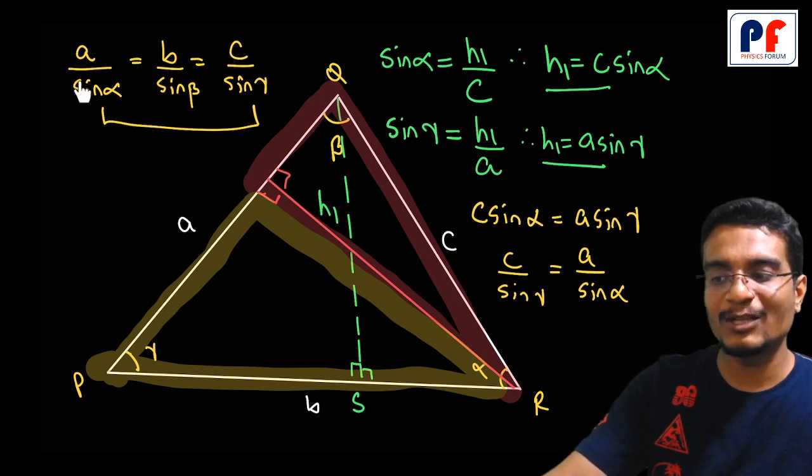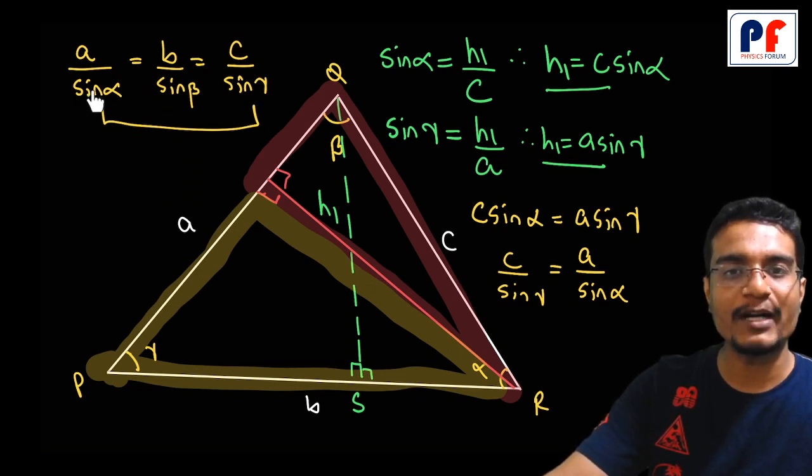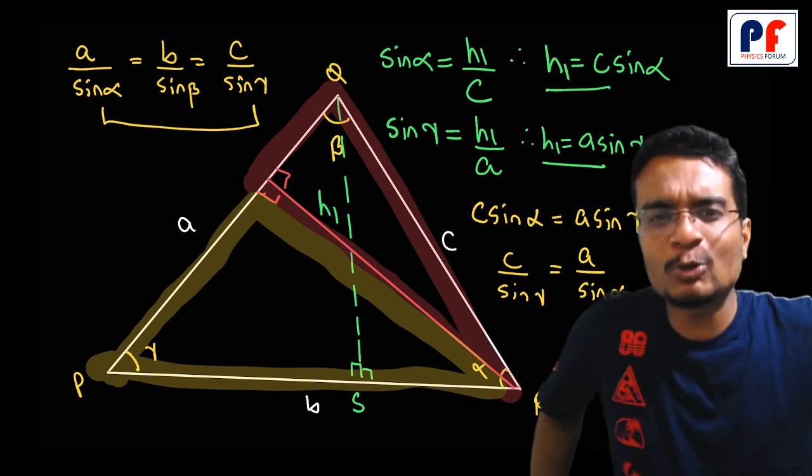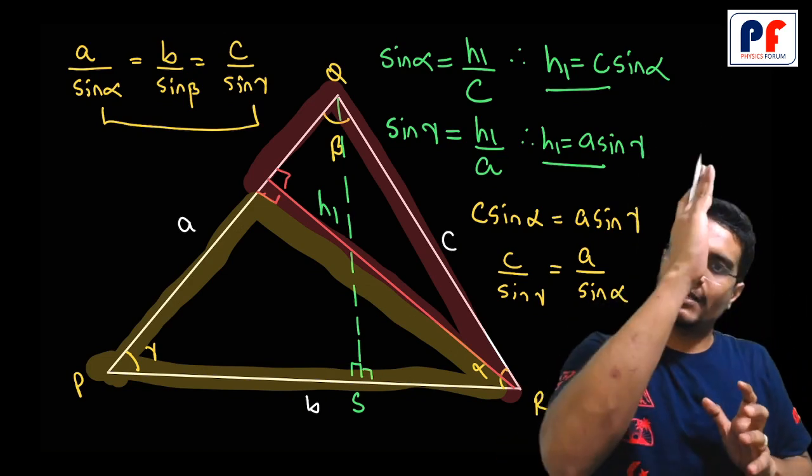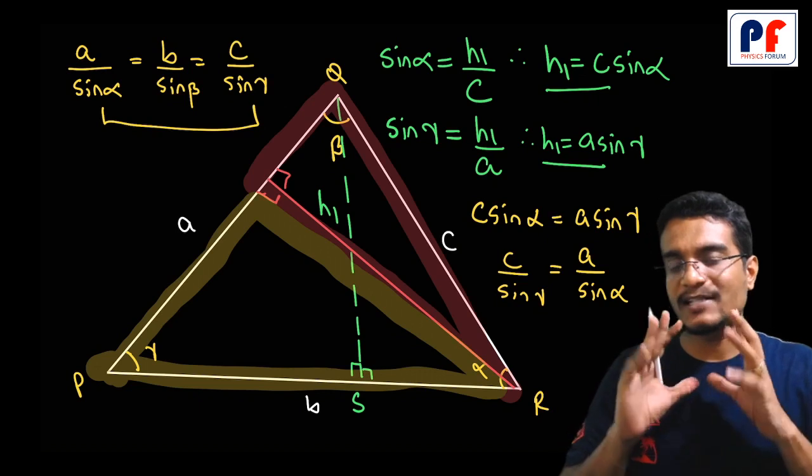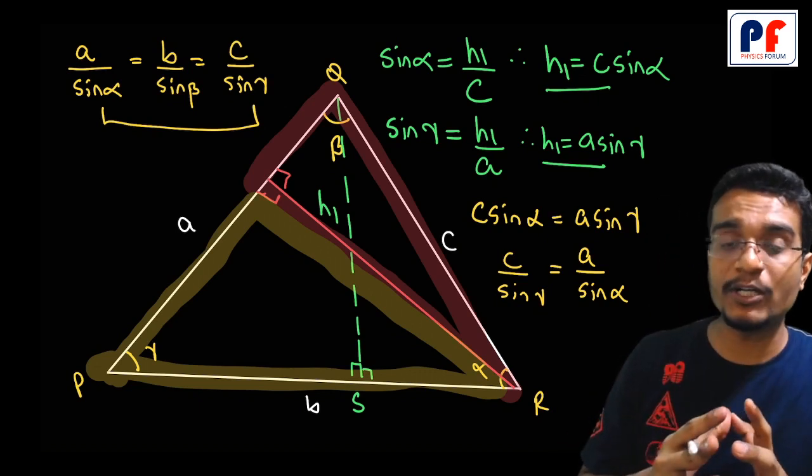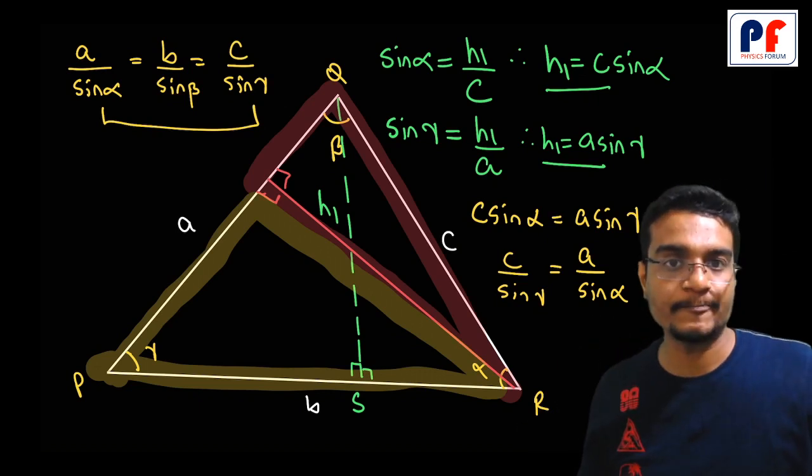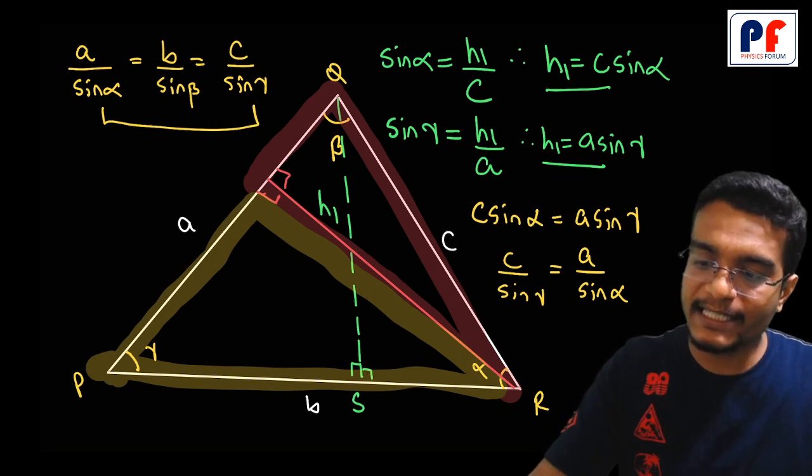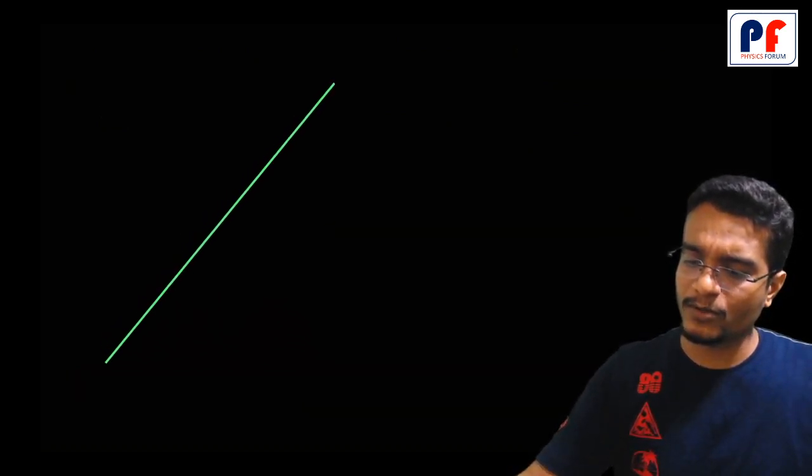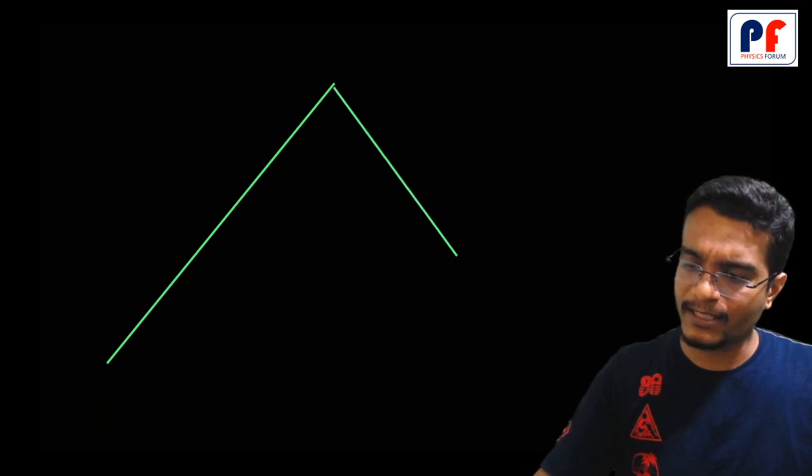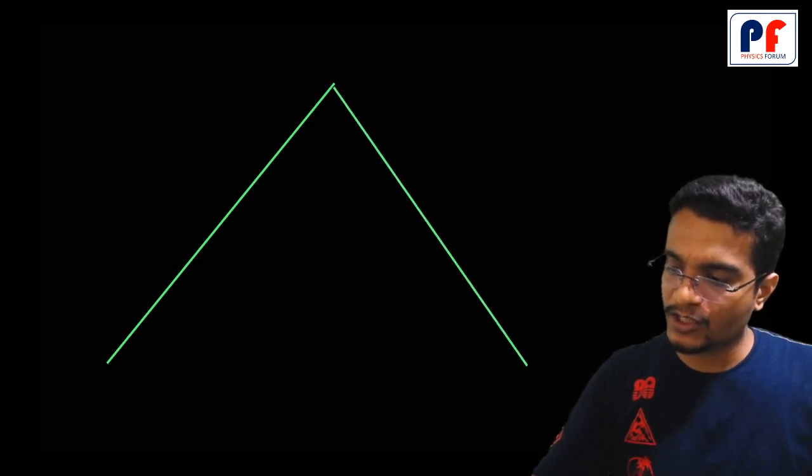In the same way, using this particular method, the simple thing was that you draw a perpendicular and use trigonometric ratios of sine. We can prove that in any triangle, this is a very easy task.